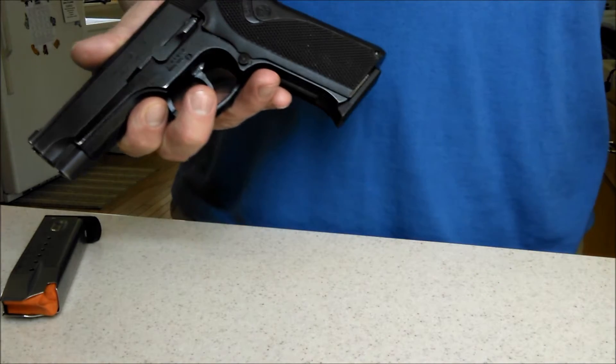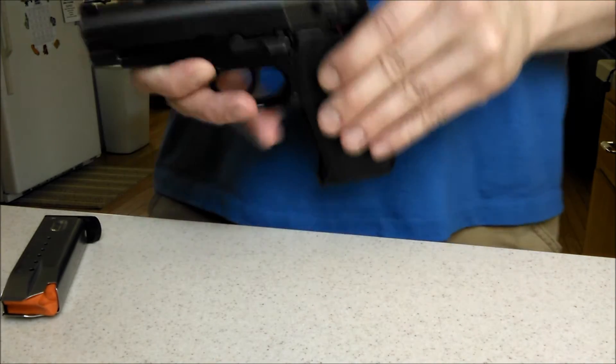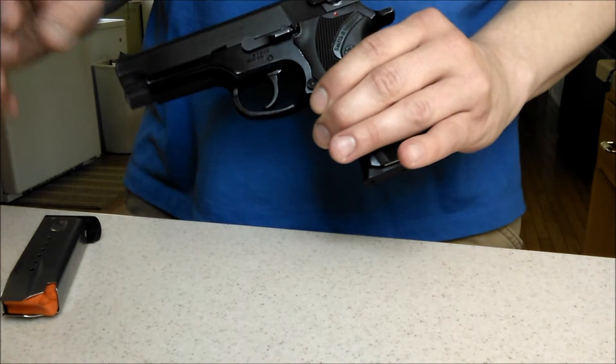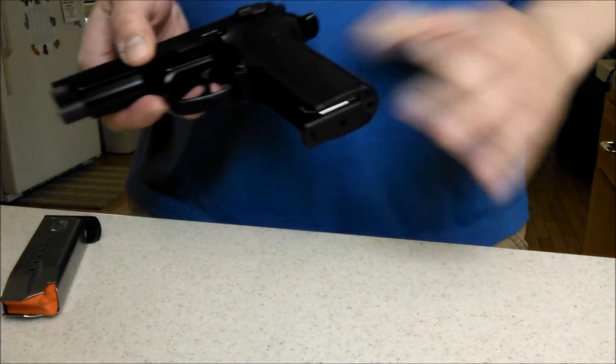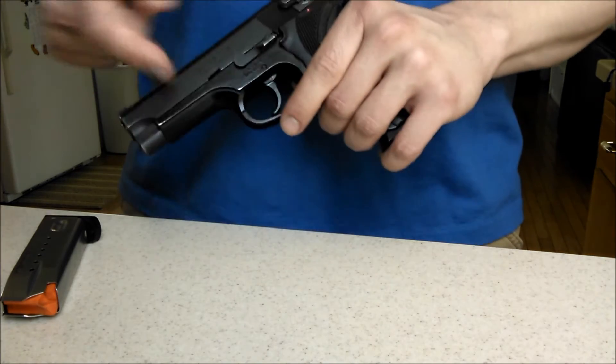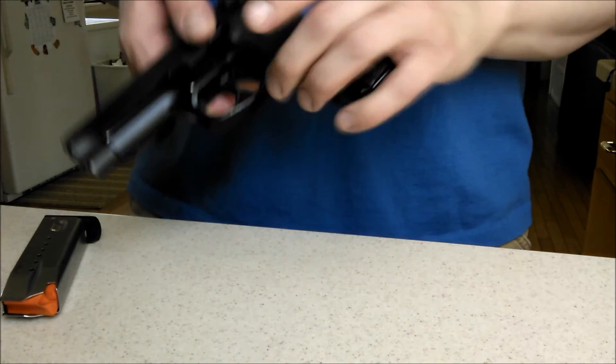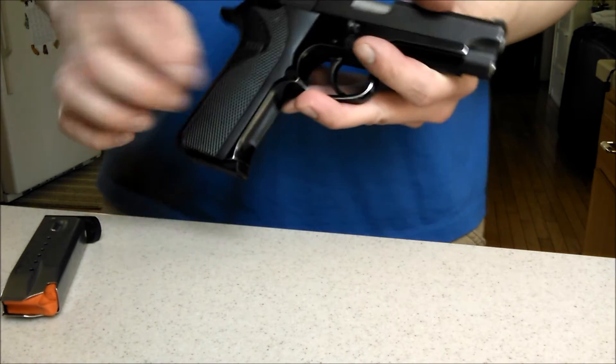I believe it was the 5904 but I'm not 100% sure. What that was, was a pistol just like this with a stainless steel bottom. Everything was the same pretty much except this was stainless steel down here whereas this is aluminum alloy, and it had ambidextrous safeties and magazine releases.